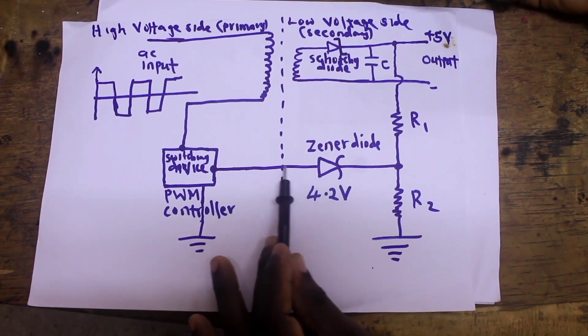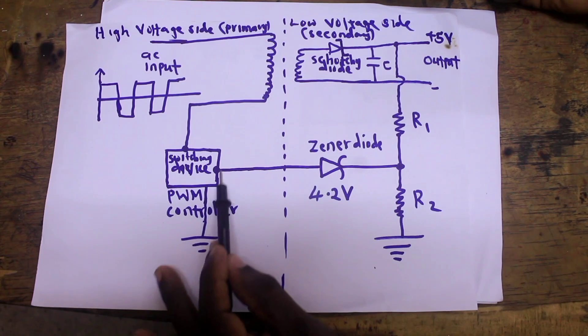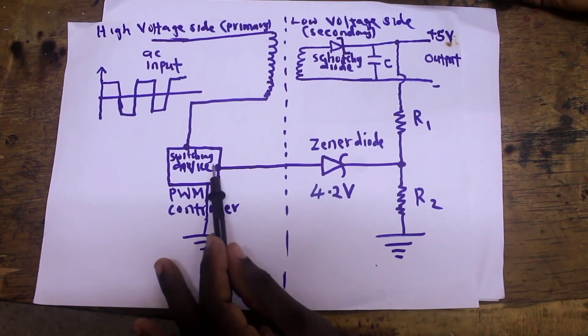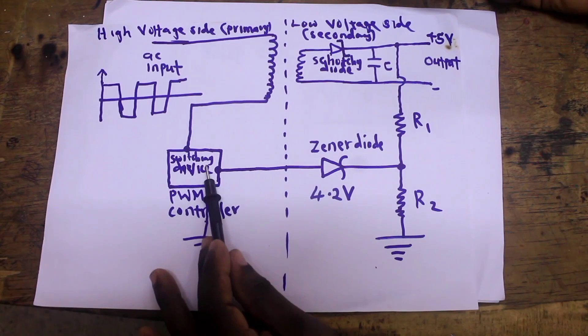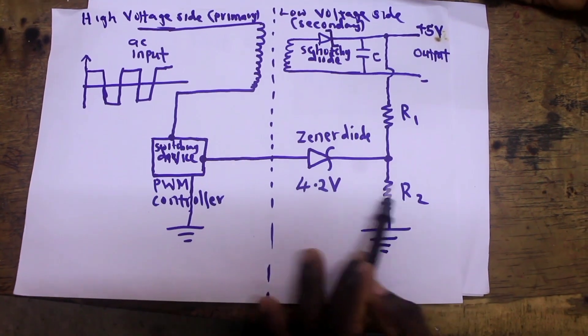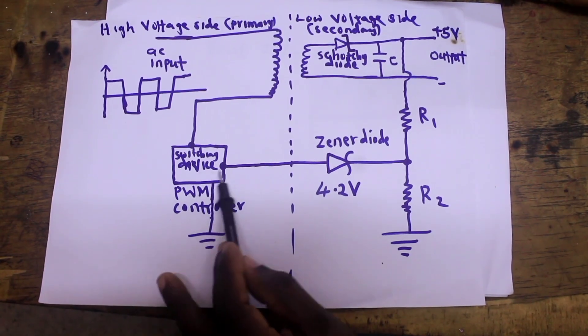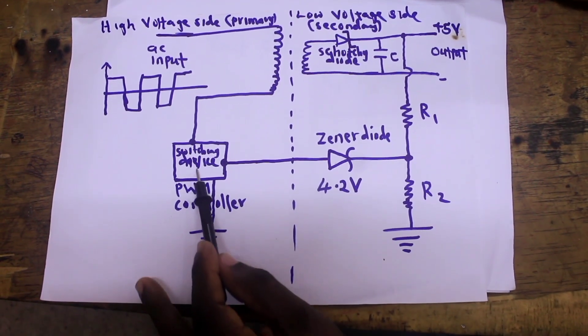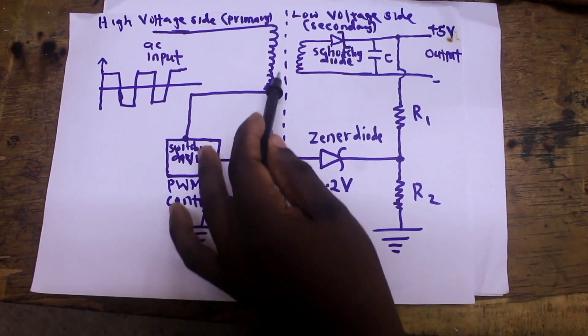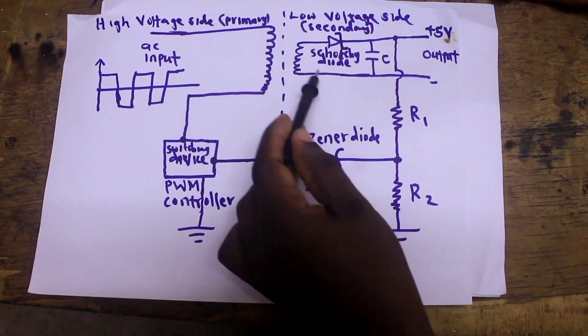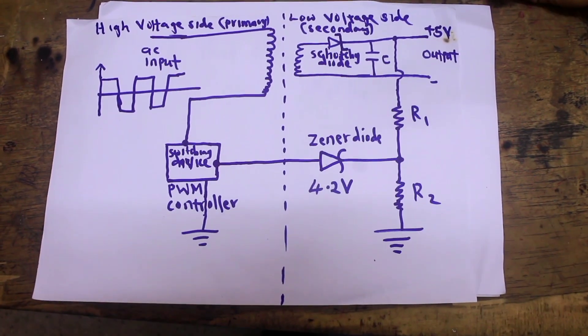So there will be no signal in this line and this pin of the PWM controller will become low. When this pin becomes low the PWM controller will sense that the voltage at the output has dropped and it will increase its duty cycle. By increasing its duty cycle it will increase the switching to the transformer. The switching to the transformer once increased the voltage at the output of the transformer will be increased and that voltage will become 5 volts.